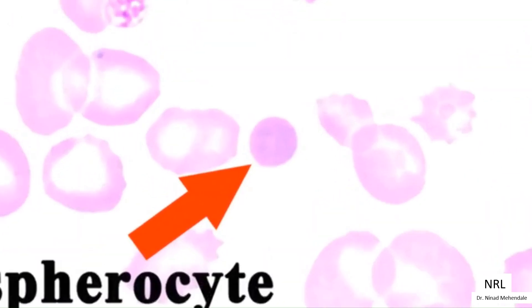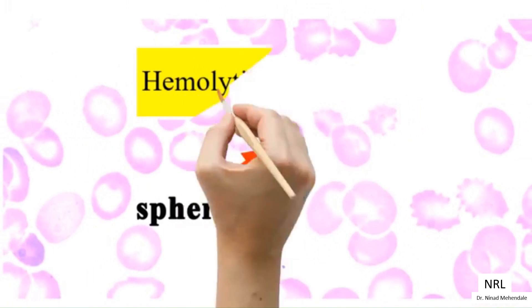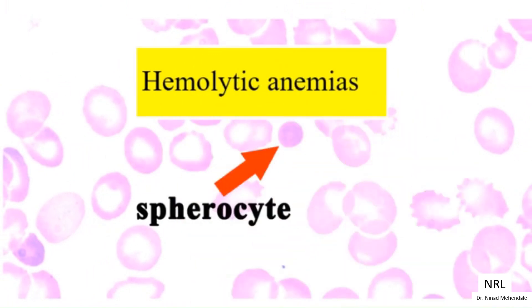Case 8: Spherocyte. Spherocytes are erythrocytes that are sphere-shaped rather than biconcave disc-shaped. Spherocytes are found in all hemolytic conditions.